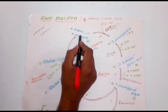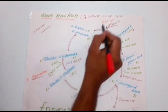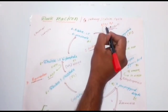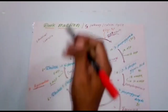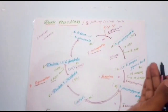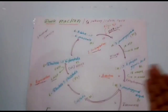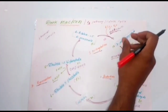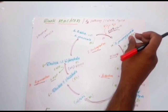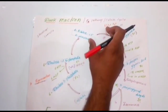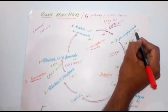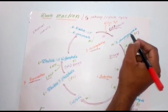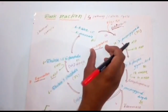RuBP consists of 5 carbons and carbon dioxide consists of 1 carbon. When they are combined — 5 plus 1 — a 6-carbon compound is formed, that is hexose sugar. Hexose sugar is an unstable compound, and very immediately it is converted into stable compounds, each consisting of 3 carbons. So the 6-carbon compound splits into two 3-carbon compounds, each called phosphoglycerate. This conversion takes place in the presence of rubisco, and this action is called carboxylation.